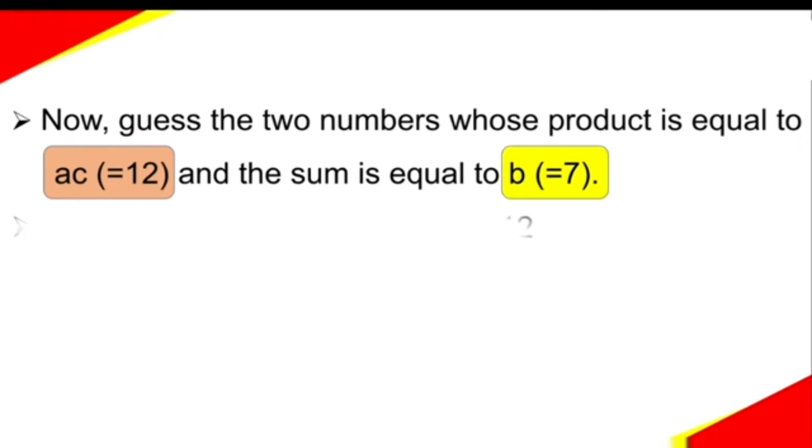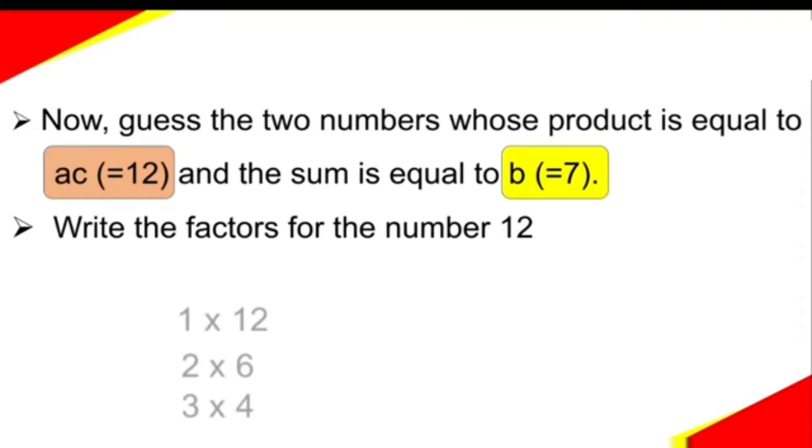For that, first write the factors for a number which is equal to the product of a and c, that is 12. The factors of 12 are 1 × 12, 2 × 6, 3 × 4, or you can write them in reverse order: 12 × 1, 6 × 2, 4 × 3.